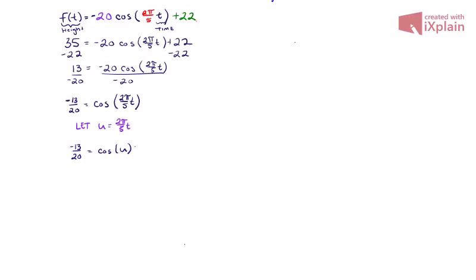So if I do this, I want to figure out what angle measure is going to give me a ratio of negative 13 over 20. If I do this using my calculator, I could do the cosine inverse of negative 13 over 20. And that's going to give me an angle measure of 2.278380764. And again, be mindful that that is our variable u.